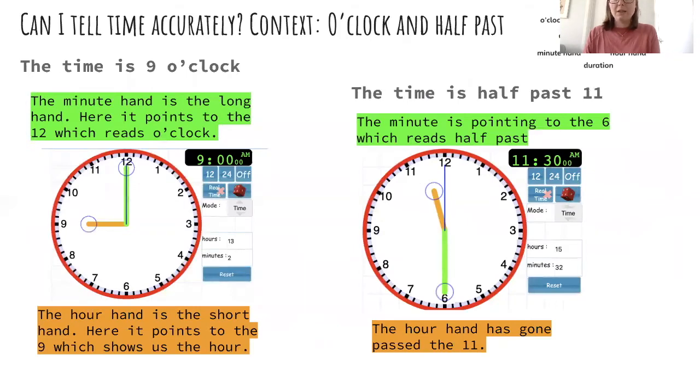This is time. So this time is nine o'clock. Here you can see that I have made the time nine o'clock. The minute hand is the long hand. Here it's green, so this is green. Here it points to the 12, which reads o'clock. And the hour hand is the short hand. Here it points to the nine, tells us the hour. So if I read this clock, it says nine o'clock.